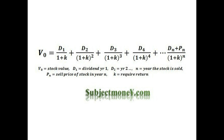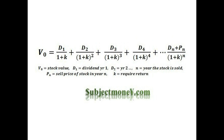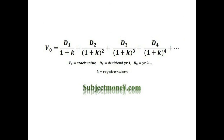Here we have the actual by-the-book dividend discount model. You can see that it is different from the other equation, as it does not have the capital gains for the sale of the stock.